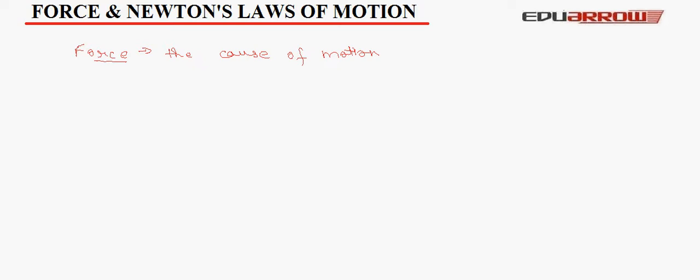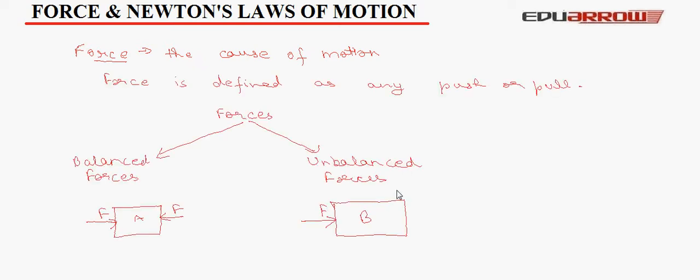We categorize forces in two ways. One is balanced forces and the other is unbalanced forces. As we can see in the figure, in object A, two forces act in equal and opposite direction. So, these forces cancel out the effect of each other and hence the object A remains stationary. These type of forces are balanced forces. And in object B, only one force acts which causes it to accelerate. These forces are called unbalanced forces.